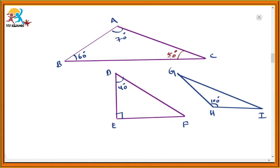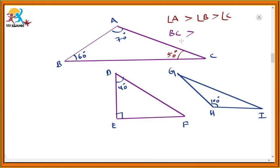Observe this triangle. In this triangle, the three angles are different, so their opposite sides are also different. Angle A is greater than angle B, and angle B is greater than angle C. So the opposite side of the greater angle A is side BC — that will be the longest side. The opposite side of angle B is AC, and AC is greater than the opposite side of angle C, which is AB. From this, we can conclude that in a triangle, the side opposite to the greater angle is the longest side, and the side opposite to the least angle is the shortest side.